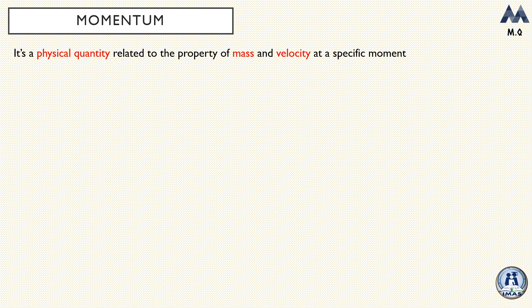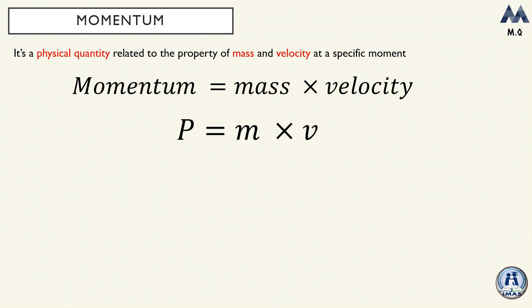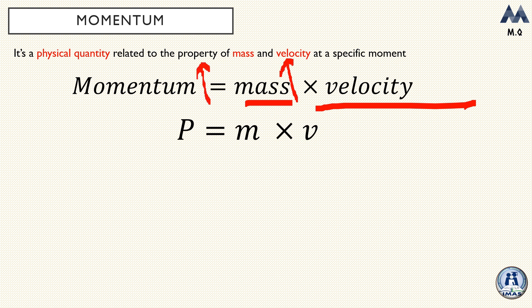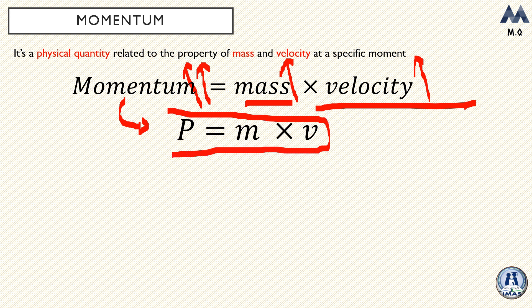Momentum by definition is the physical quantity of objects related to both mass and velocity together. The formula for momentum — the state of motion of an object that accounts for both mass and velocity — is: momentum equals mass times velocity. If an object has more mass it has more momentum; if it has more velocity it also has more momentum. We denote momentum by the letter p, so p equals mass times velocity.